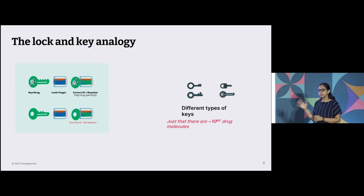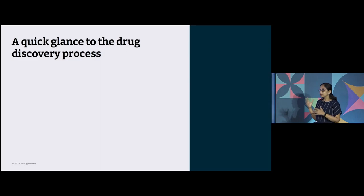Taking a real world example, in the lock and key analogy, the target is the lock and the drug is the key. Putting into perspective, there are 10 to the power of 60 drug molecules available and maybe being created more as we are talking. So forming the right drug target complex or the lock and key complex where only the right key will be able to open the lock.